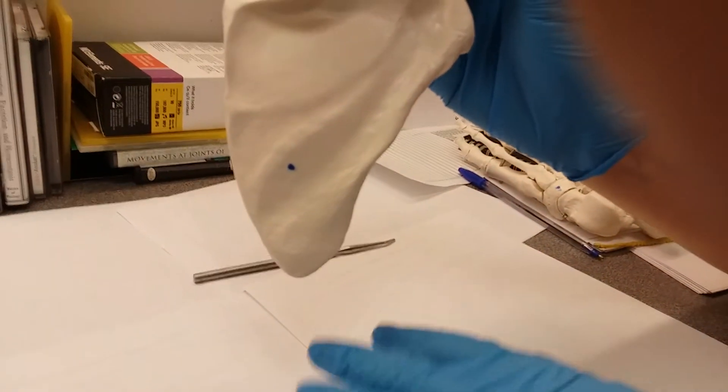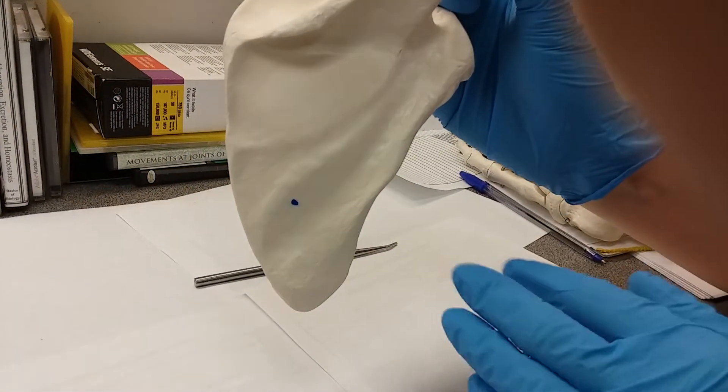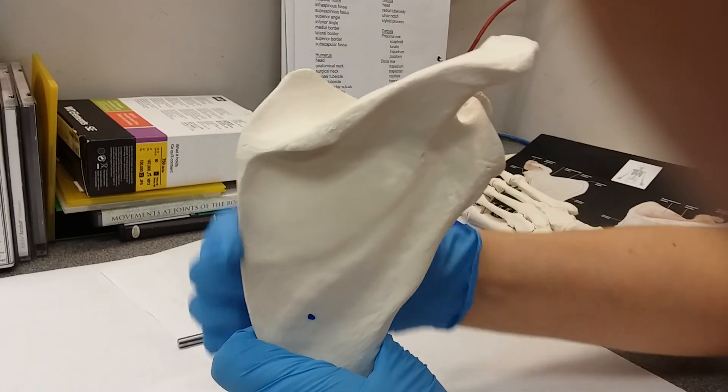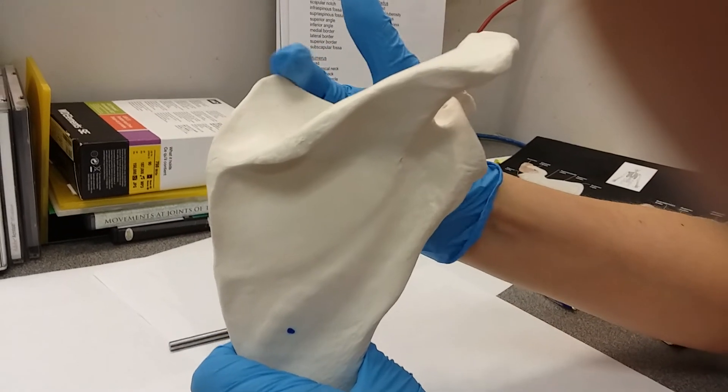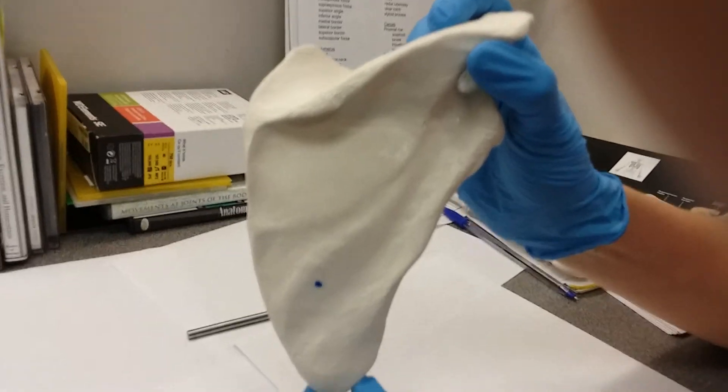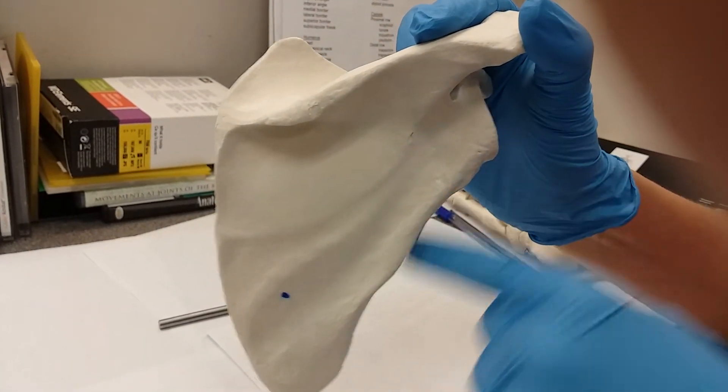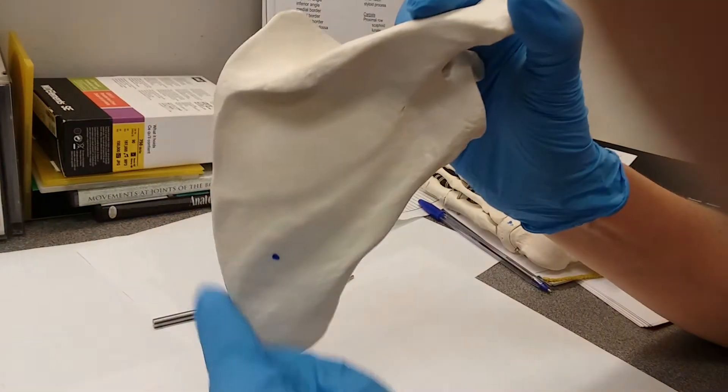And these angles are formed by the joining of borders. So our superior angle is formed by the medial and superior borders. While our inferior angle is formed by the lateral, note that it's always under the glenoid cavity, and medial borders.